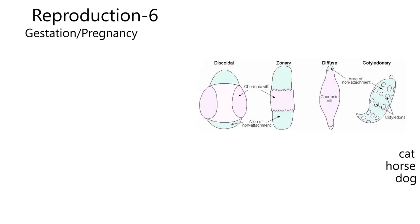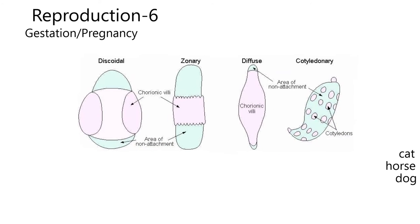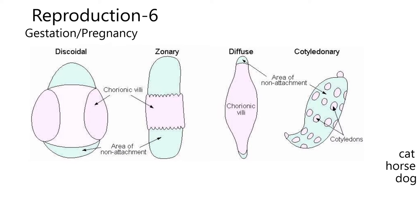Let me show you this diagram I found. We're going to go through some characteristics of the dog, cat, and horse, but I wanted to show this nice figure about the four types of placental attachments that can occur between the placenta and the uterus. An animal doesn't have a choice — a cat can't say, 'Oh, I'll do cotyledonary this pregnancy.' It's very species specific.